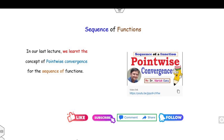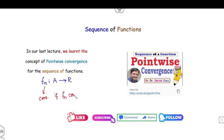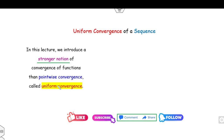So what we have discussed so far: we have defined the pointwise convergence of a sequence of functions. To quickly recall, if you have a sequence of functions from A to R, then this sequence is said to be convergent pointwise if the sequence is convergent for each x belonging to the domain A.